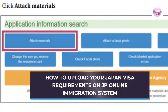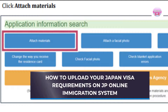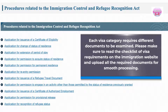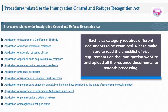This tutorial will be a detailed guide on how to upload your Japan visa requirements on the online immigration system. If you haven't watched the complete online immigration detailed guide in our channel, please check it out first so you'll have a general idea on how the system works. Each visa category requires different documents, so please make sure to read the checklist of visa requirements on the immigration website and upload all the required documents for smooth processing.